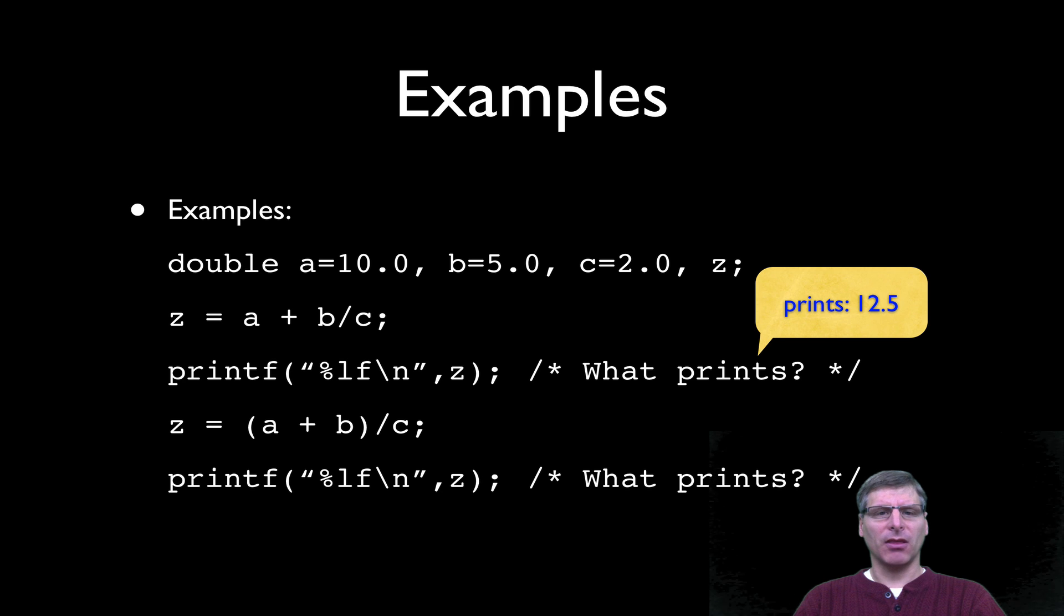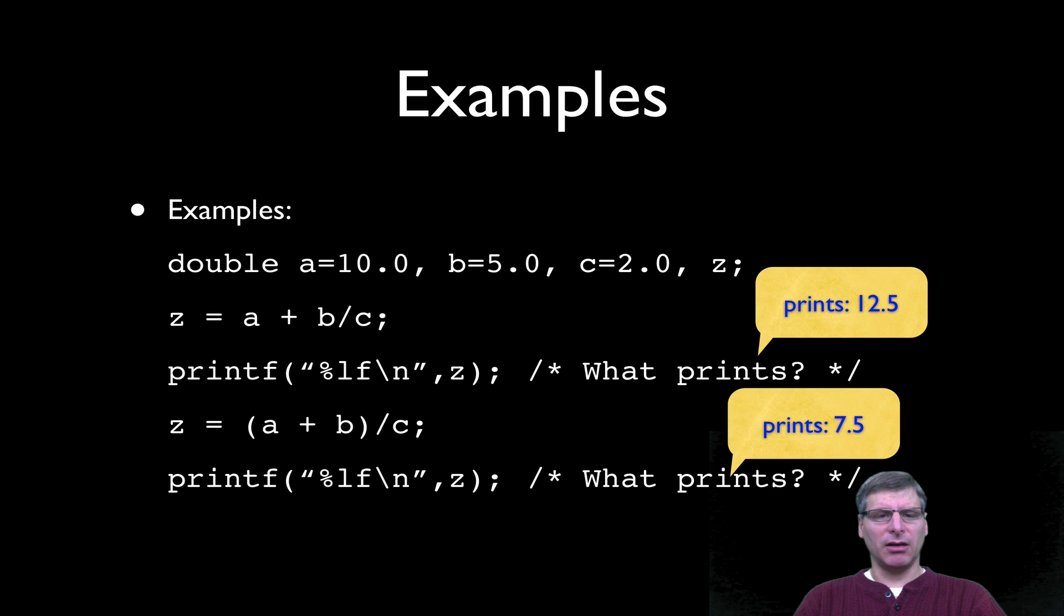In the next example, we have z equals a plus b, but notice we've put parentheses around the a plus b here. What this does is it forces or it instructs the compiler we want to have a added to b before doing the division by c. So in this case, we have a plus b, which is going to give us 15.0, divided by c, which should give us 7.5. So in the printf statement that follows the expression, we should see it outputting the value 7.5.